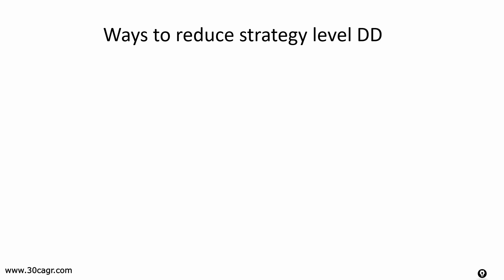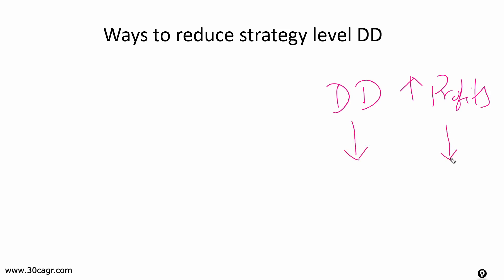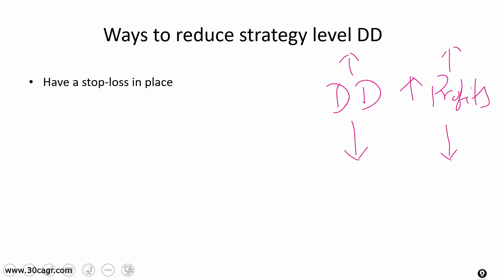Before I start discussing ways to reduce drawdowns, I want to highlight that drawdowns are directly proportional to profits. If drawdowns are less, profits will also be less, but if you're okay with more drawdowns you can increase profits as well. It's all about striking the right balance between drawdowns and profits, especially when developing strategies. Be wise in choosing what amount of drawdowns and profits you want.